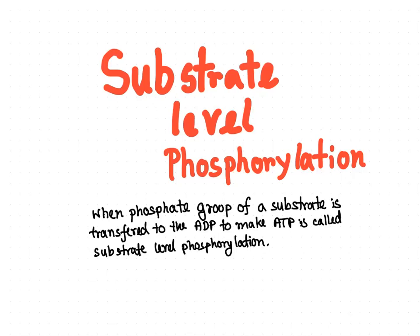In this video we are going to learn about substrate-level phosphorylation. When the phosphate group of a substrate is transferred to ADP in order to make ATP, it is called substrate-level phosphorylation. The key point is that the phosphate group, which is derived from a substrate, is added onto ADP and as a result ATP is produced.